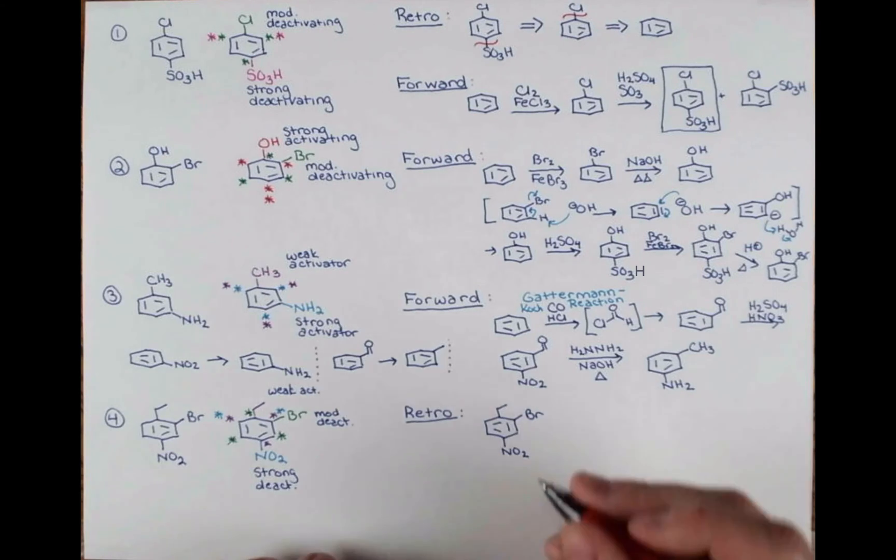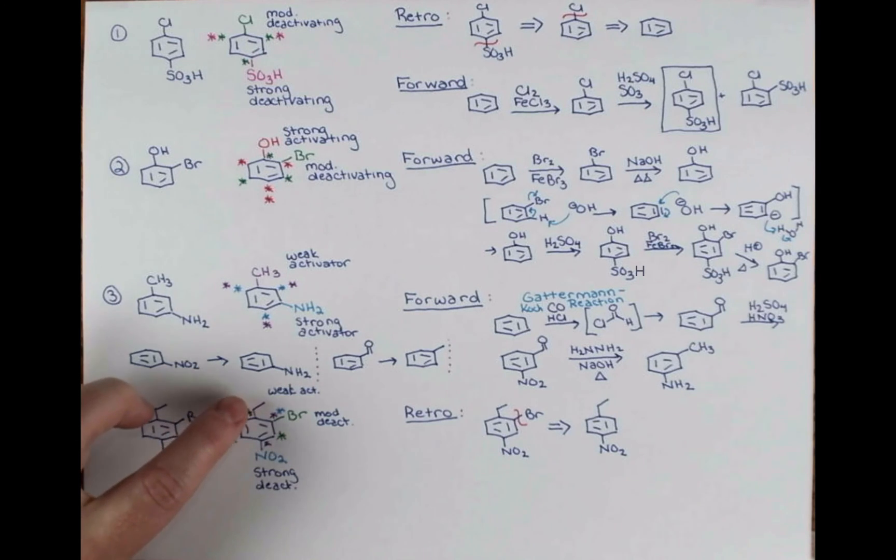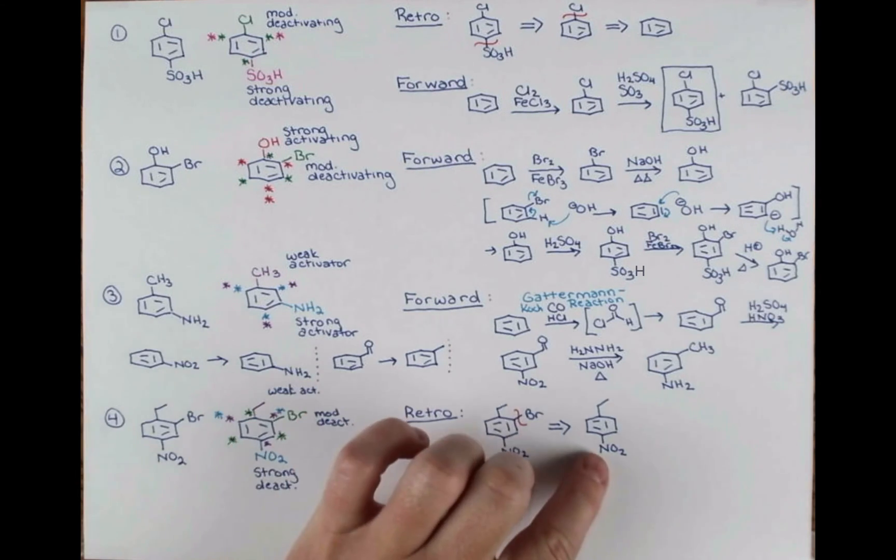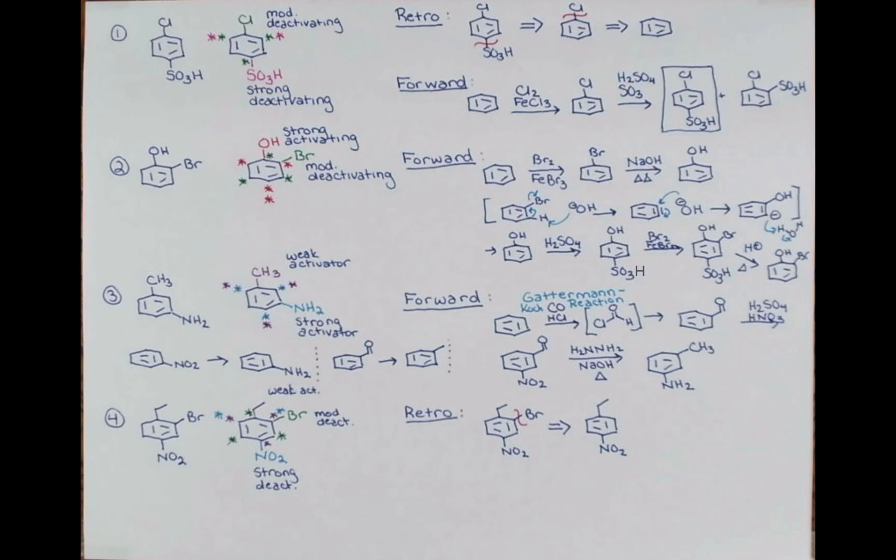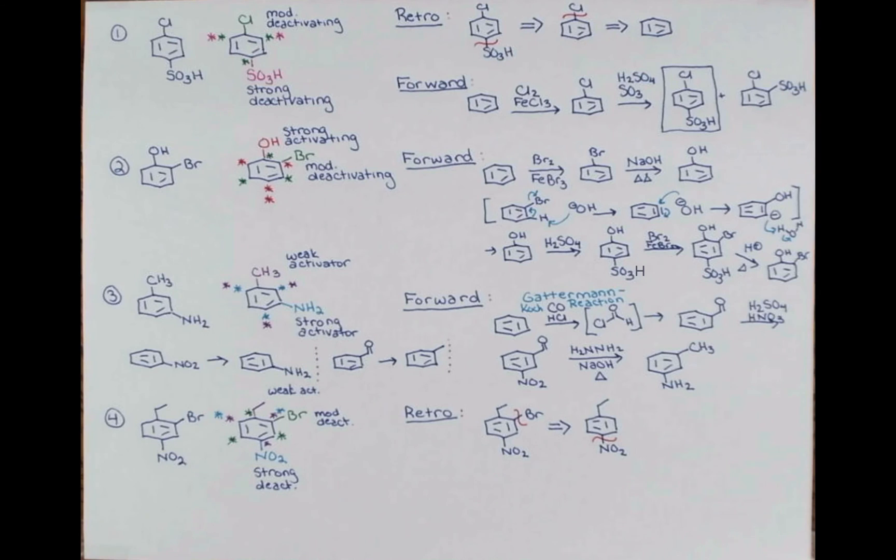So the bromine is directed well by these two other substituents being there. So let's disconnect that first. That gets us to this alkylated nitro. And remember we wanted to introduce this alkyl group first so that the nitro would go ortho-para and the ring would be activated. So we'll cleave this nitro off the molecule next.